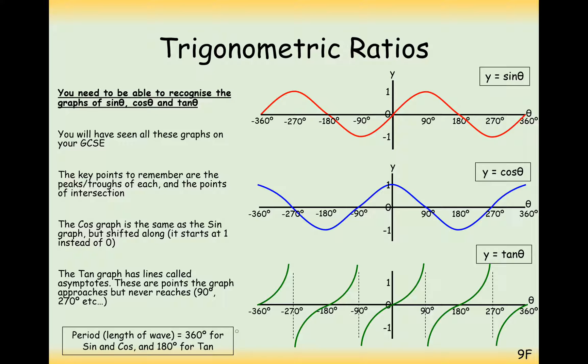Okay, so the period of length for the sine and the cos graph is 360, and the period of length for the tan graph is just 180 before it starts repeating itself again.